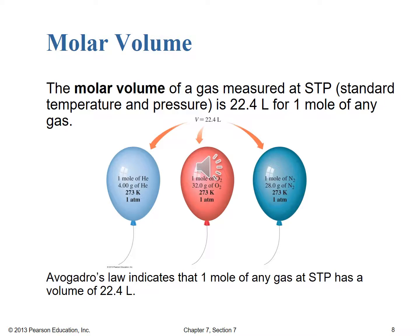Thinking about molar volume — we've been thinking about moles and volumes here with Avogadro's Law. The molar volume of a gas measured at STP, the standard temperature and pressure we just defined, is 22.4 liters for one mole of any gas. To be precise, it's 22.414 liters, but 22.4 is what our text uses. It doesn't depend on the identity of the gas because, thinking back to our properties of gases, these are very small, fast-moving particles where their individual volume doesn't make a whole lot of difference. The fact that an O2 molecule is larger than a helium atom doesn't factor in when we're dealing with fast-moving species in a large container.